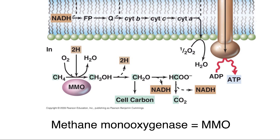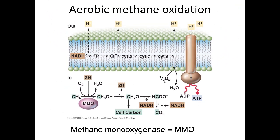They use methane and methane monooxygenase, which uses oxygen to turn methane into methanol. They then oxidize it again to make an aldehyde, which can then go to cell carbon. Or they can extract electrons from it, make CO2, and then use those electrons in the classic electron transport chain to make a proton gradient and then ATP.